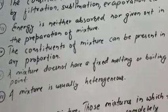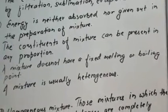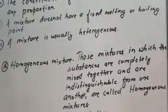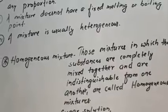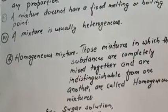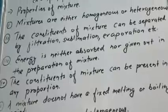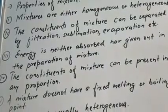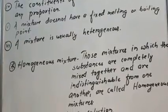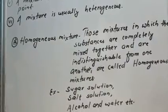Now, homogeneous mixture kya hote hain? Ye aise mixtures hain jinmein substances completely aapas mein mix up hote hain aur unhein distinguish nahin kiya ja sakta — pata nahin lagaya ja sakta. Unhein hum homogeneous mixture kehte hain. Haan, agar kisi method ka use karein like filtration, sublimation, evaporation to inhein alag kar sakte hain, but genuinely inhein alag nahin kiya ja sakta. Examples: sugar solution, salt solution, alcohol and water.